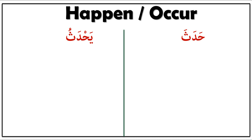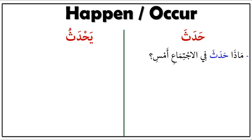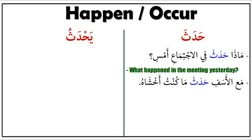Haditha is the past tense and yahdothu is the present tense. Let's start with haditha first. Please look at the first sentence: مَاذَا حَدَثَ فِي الِاجْتِمَاعِ أَمْس — mada haditha felijtimaai ems — it means 'what happened in the meeting yesterday.'